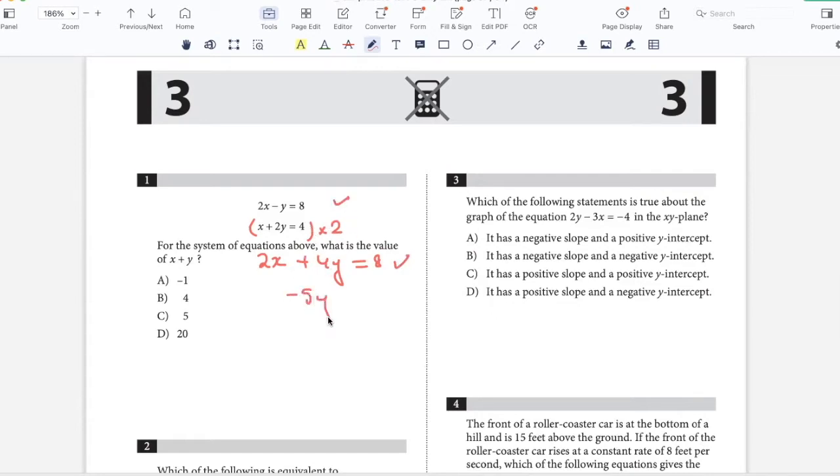So I'll get negative 5y equals 0, so y is 0. And if I put y equals 0, I get 2x equals 8, so x is 4. So the value of x plus y is 4 plus 0, which is 4. Option B.